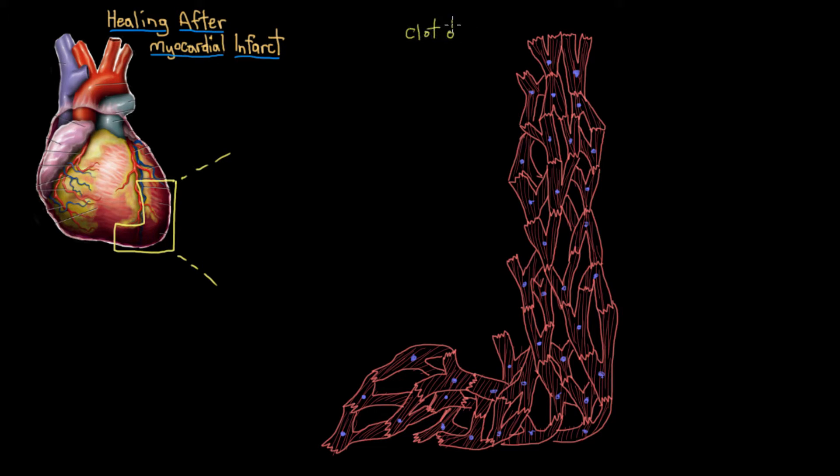So remember, a clot is gonna develop upstream in the coronary artery that serves this area. And that clot will stick around for over 20 minutes to cause irreversible damage in this heart muscle, depriving this area of muscle of oxygen.